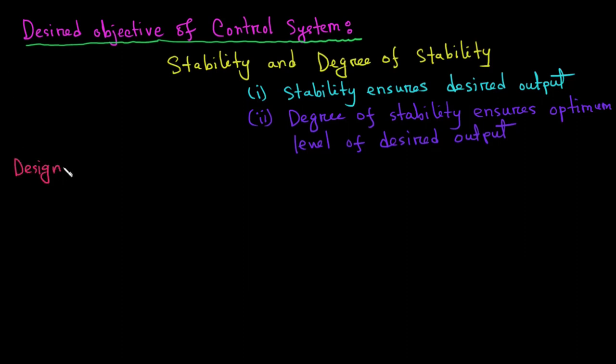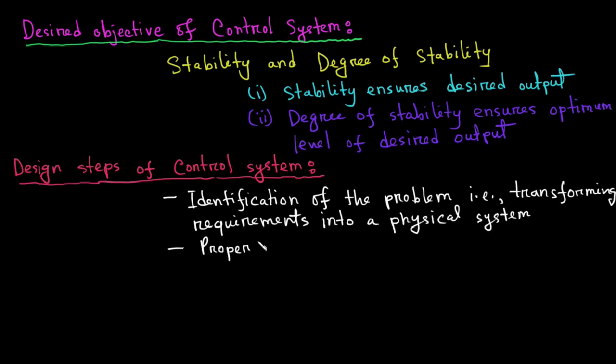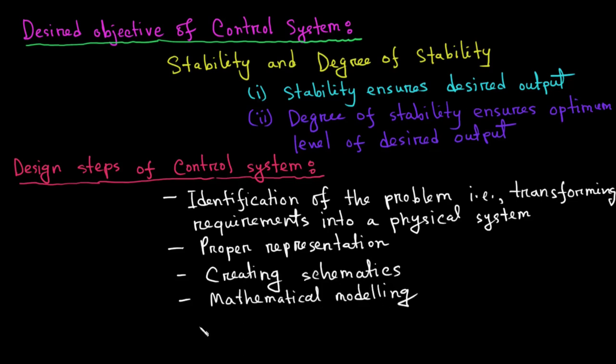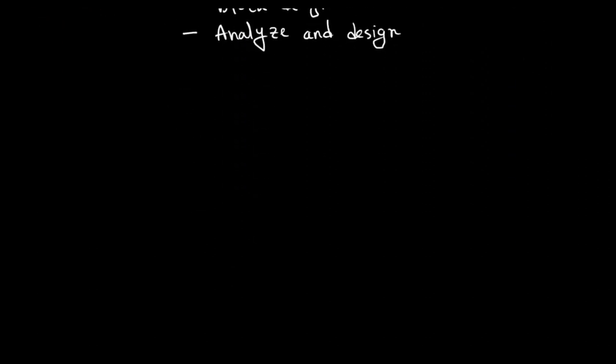Now let's talk about the design steps of a control system. There are six design steps of a control system and those are number one identification of the problem that is transforming requirement into a physical system, number two proper representation, number three creating schematics, number four mathematical modeling, number five solution technique. For example, reducing the block diagram and the final step is analyze and design.